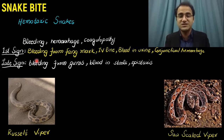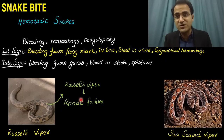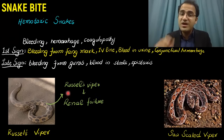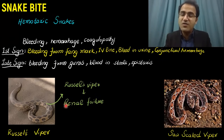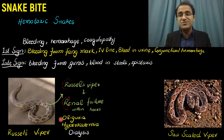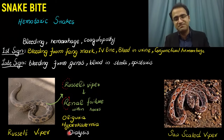Remember, Russell's viper is also renal toxic — it causes renal failure within hours. Remember: R for Russell's and R for renal failure. These patients will have oliguria, hyperkalemia, and may need dialysis; otherwise they will die of the poison.